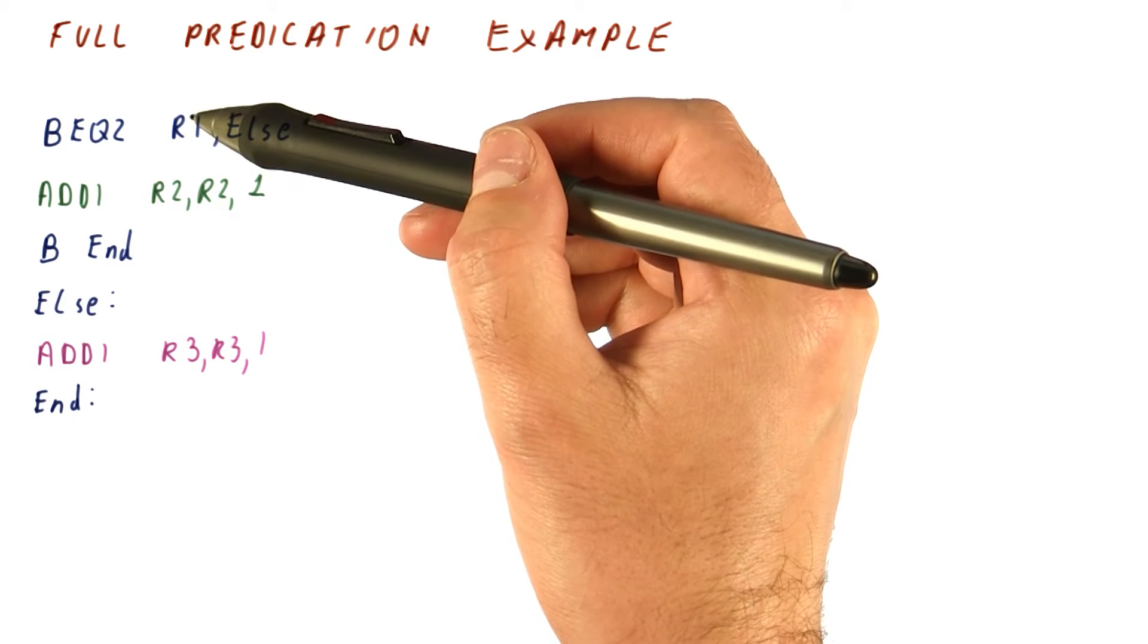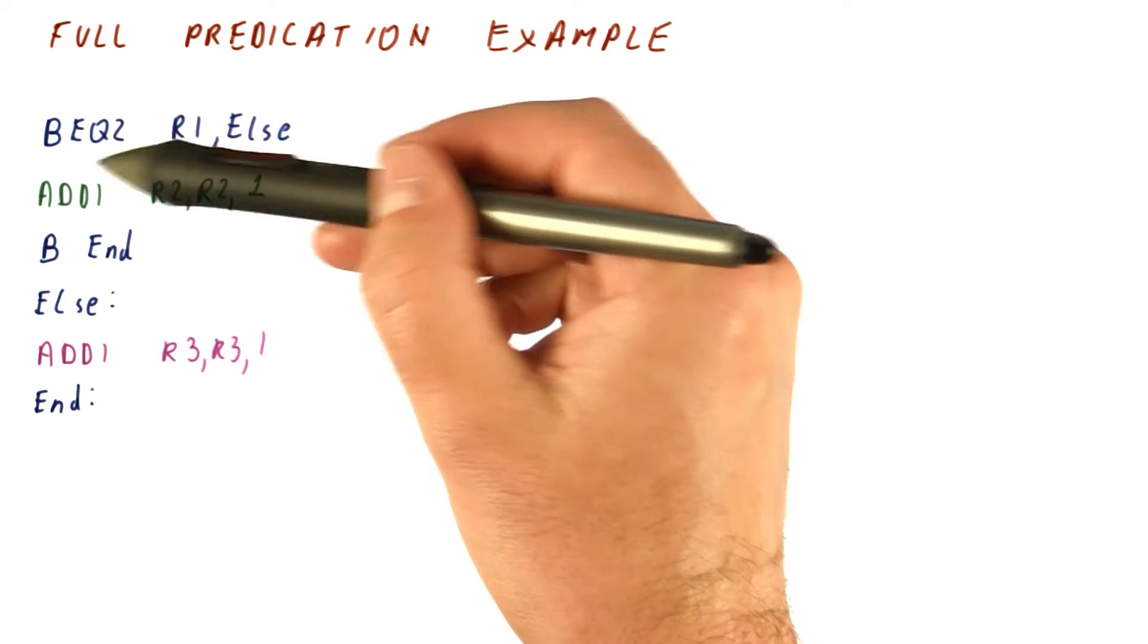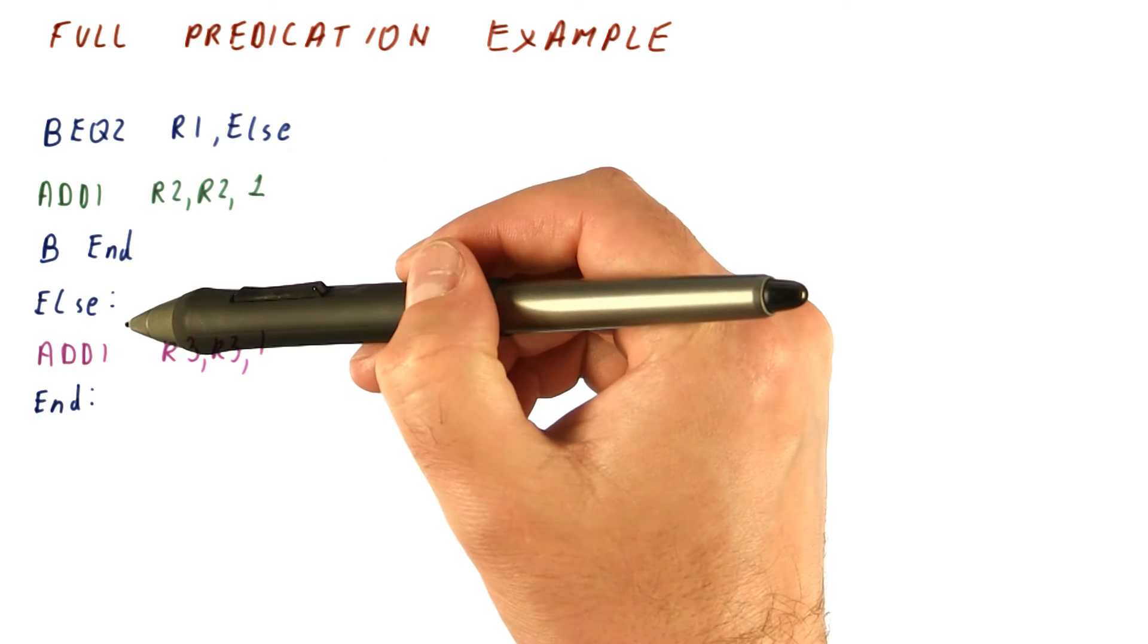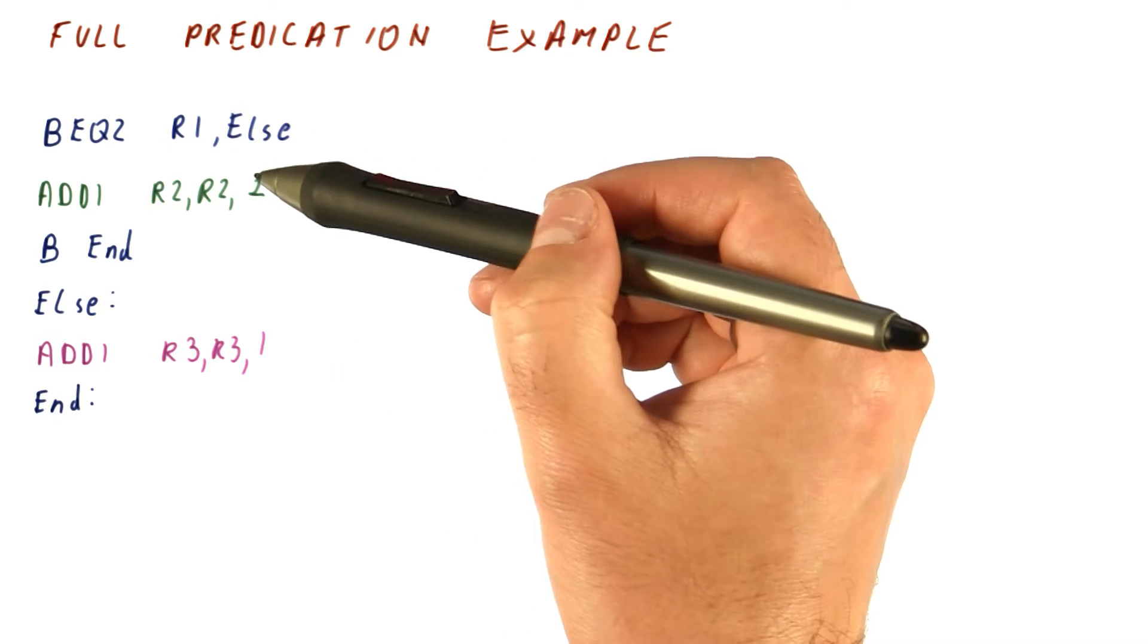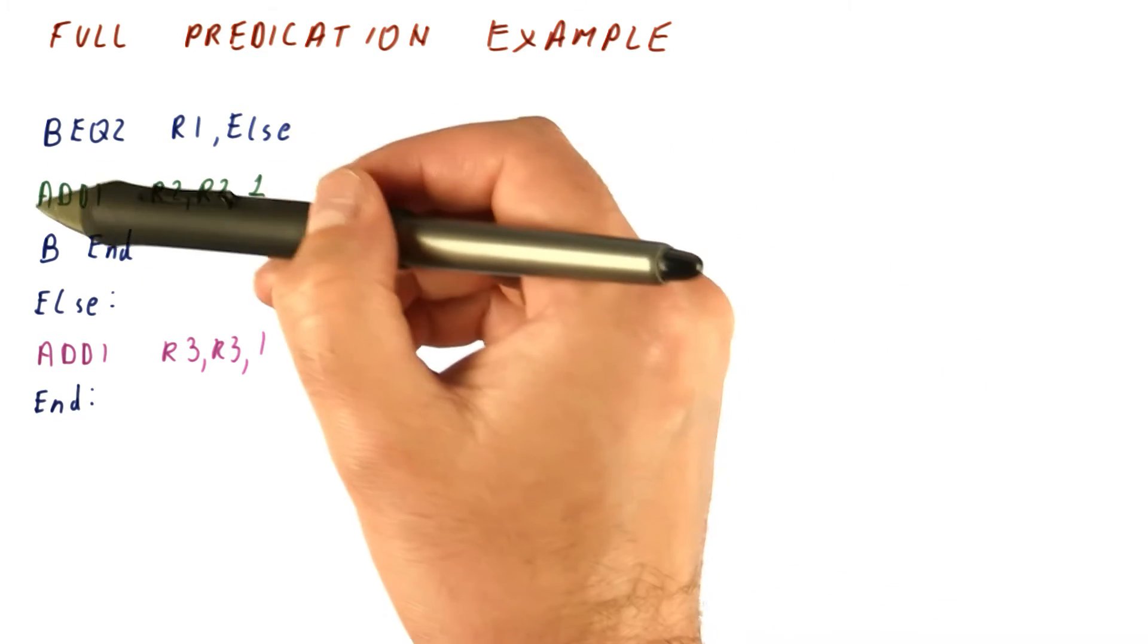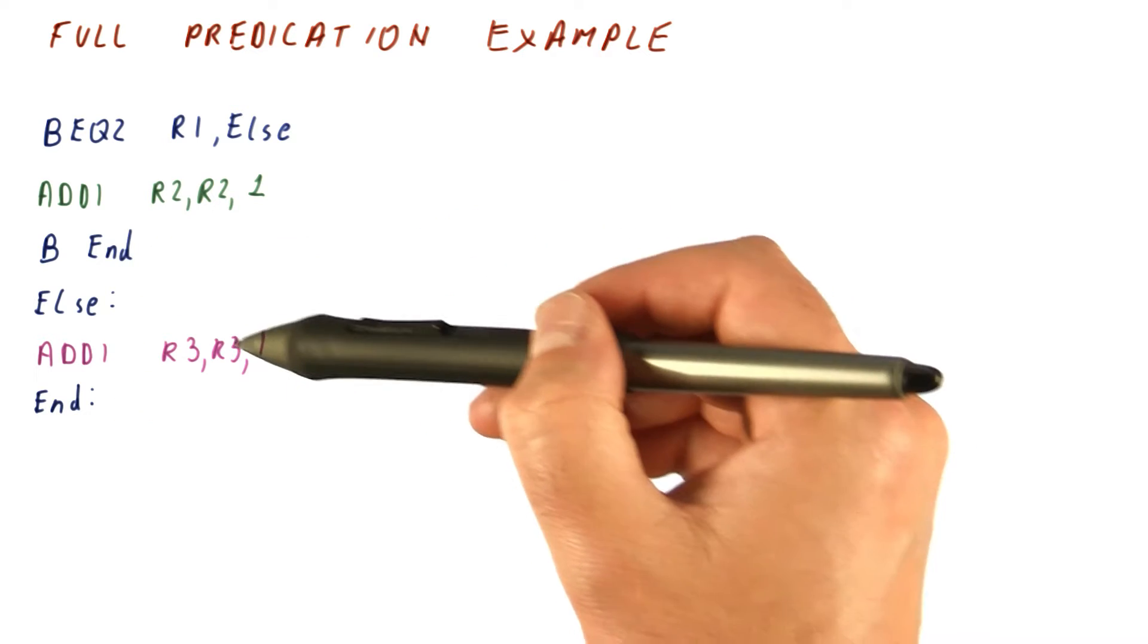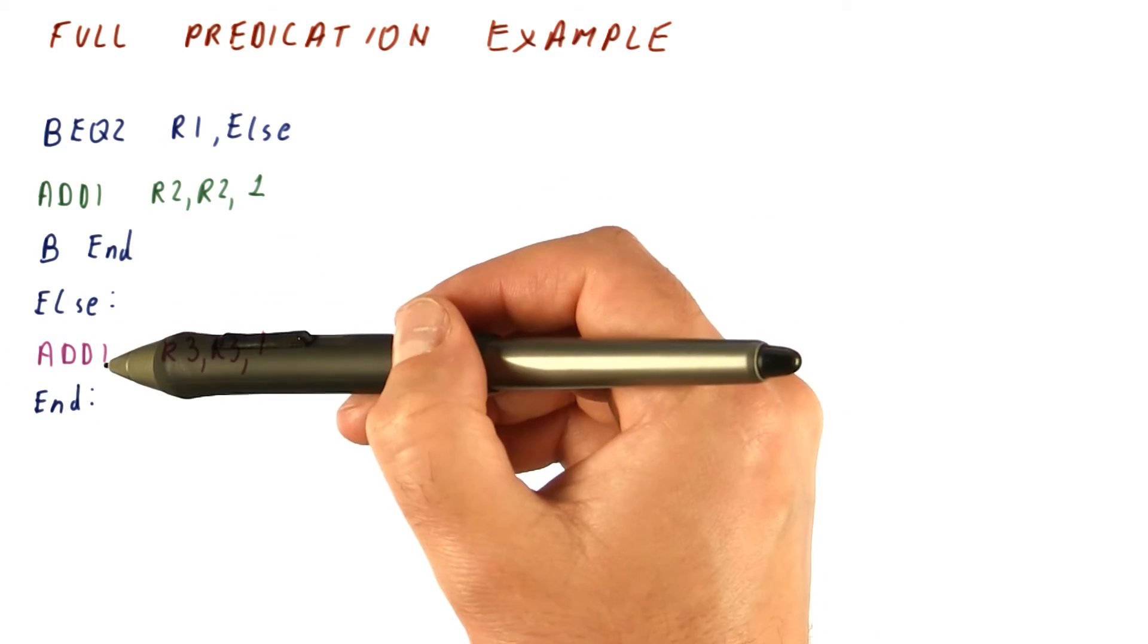Let's say we have this code where R1 is compared to 0 and we branch here if it's equal to 0. If it's not equal to 0, we do this and branch out. If it is equal to 0, we do this and continue.